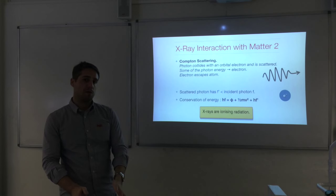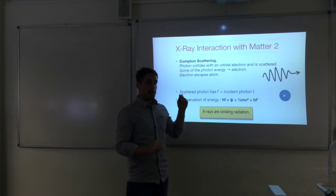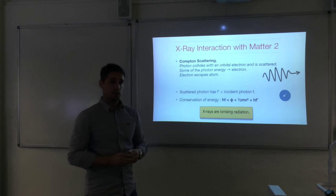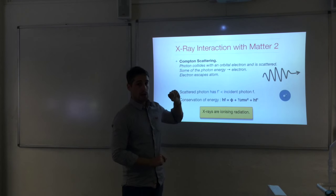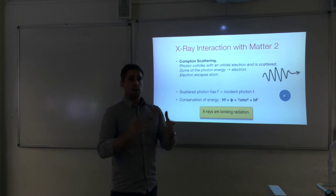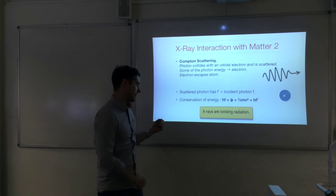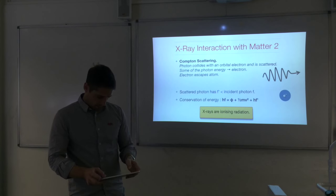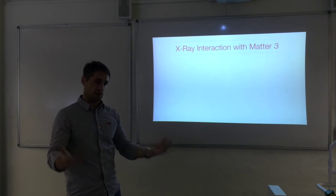In both the photoelectric effect and Compton scattering, electrons are removed from atoms, leaving behind positive ions. X-rays are therefore ionising radiation — they can remove electrons and leave behind positive ions. If those ions are in molecules, you can get different chemical processes happening. Gamma rays are also ionising radiation, and that's their harmful property: if ionisation happens in cells and new chemical reactions take place, that's dangerous.